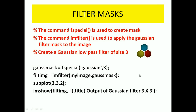Next, here we are using the MATLAB command fspecial, which is used to create that mask. And we are using another MATLAB command imfilter, which is used to apply a Gaussian filter mask to the image. So Gaussian_mask = fspecial('gaussian', 3) — that is a Gaussian filter mask of size 3x3. And applying it to this image: filtered_image = imfilter(my_image, Gaussian_mask). So like that we can use any type of filter mask using the imfilter MATLAB command.